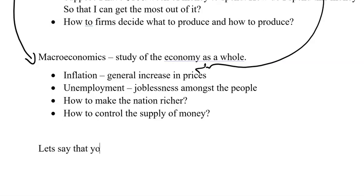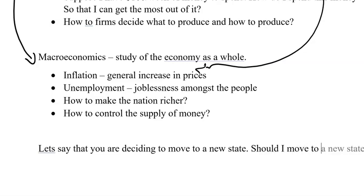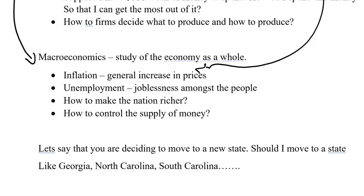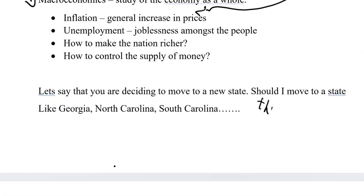Let's look at an example of how microeconomics and macroeconomics are related. Let's say that you are deciding to move to a new state. A lot of people are moving to the southern states, and so you may be deciding: should I move to a state like Georgia, or North Carolina, or South Carolina? This would be a microeconomic decision because you as an individual are deciding where you should move.